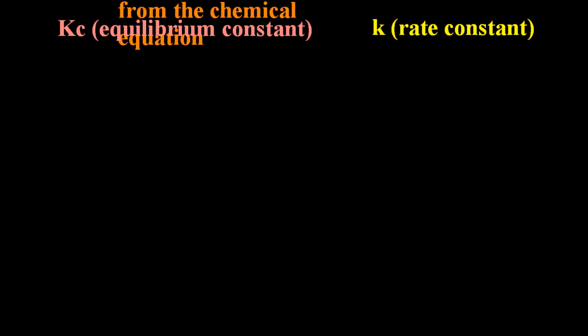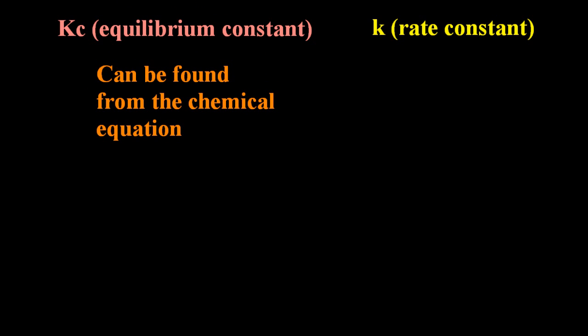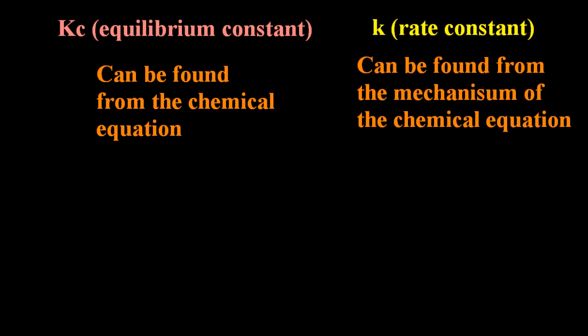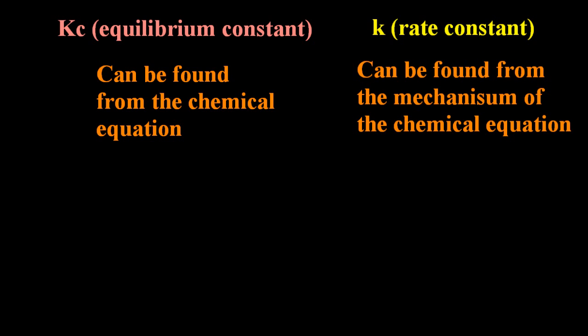A quick comparison. Kc. Well, you can find that from the chemical equation. But the rate constant, lowercase k, that can only be found from the mechanism of the chemical reaction. You can't get it from the equation.